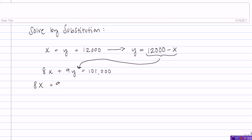8X plus 9, and instead of multiplying by Y, I'm going to multiply by this expression, 12,000 minus X, equals 101,000.